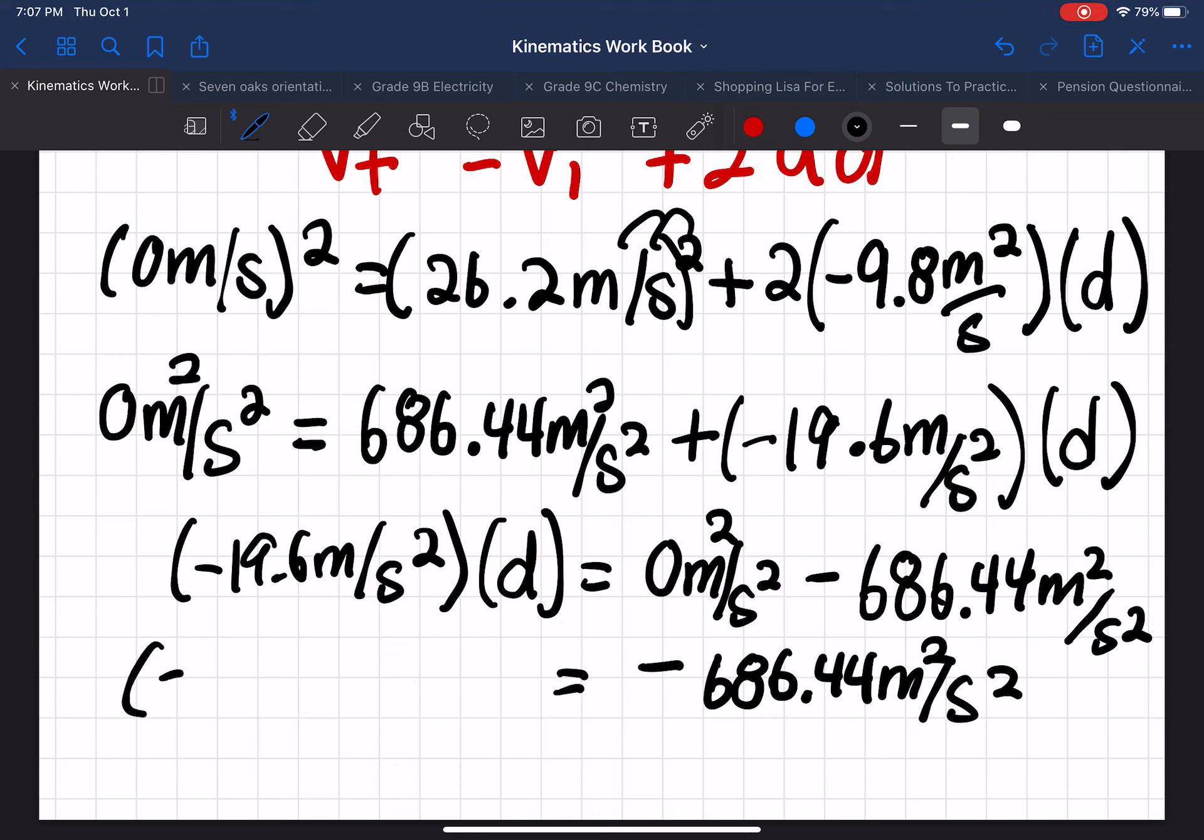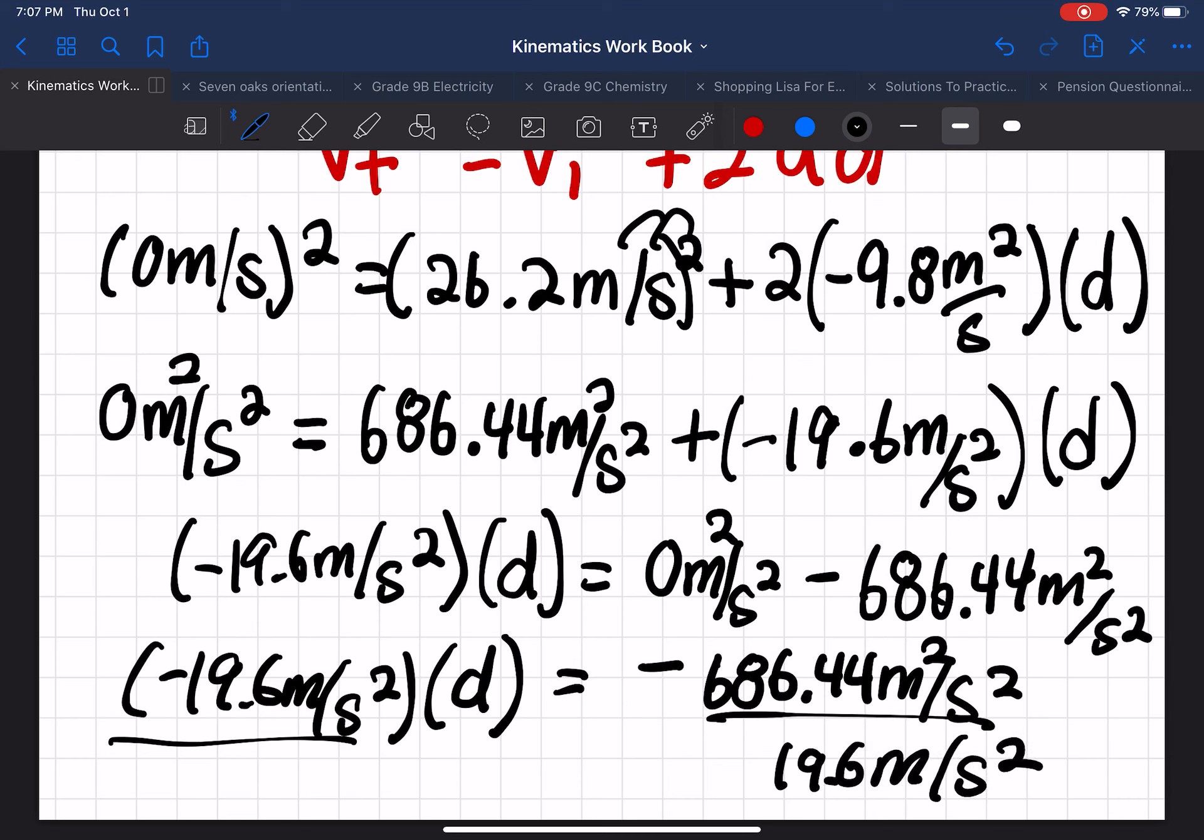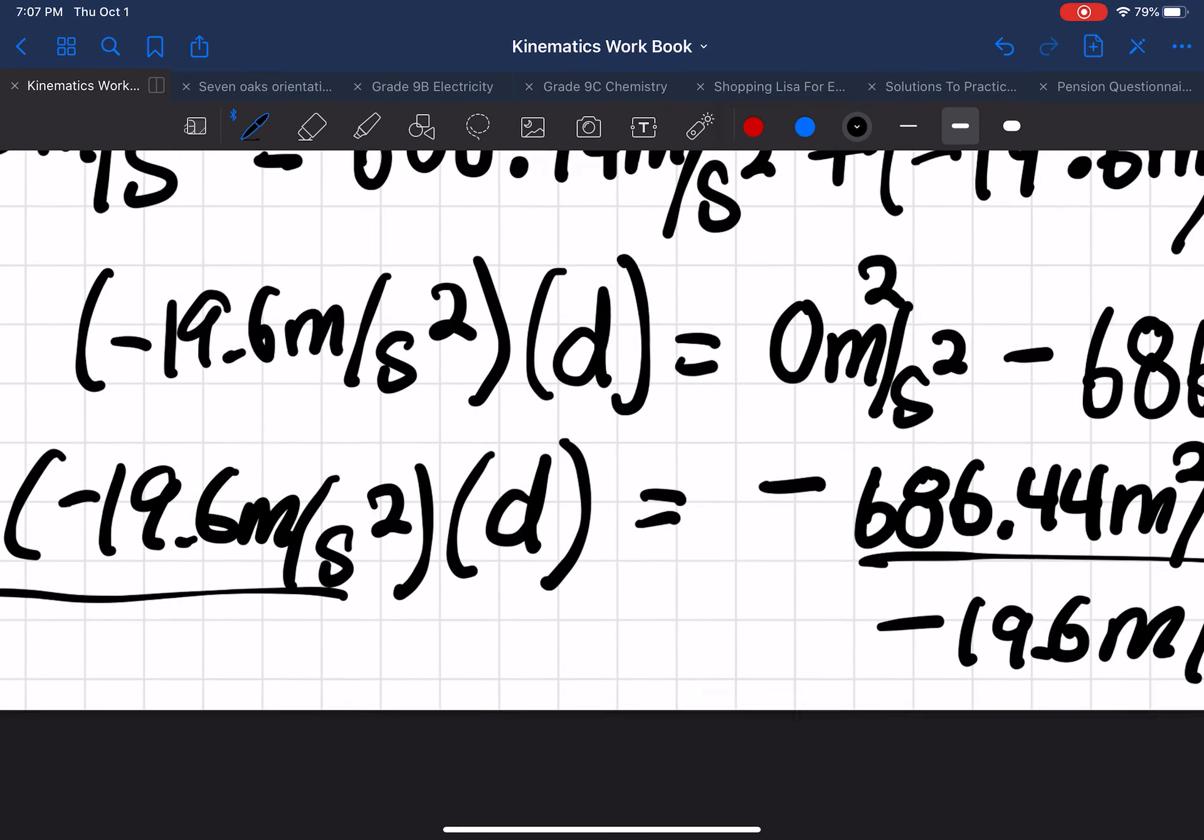And you're going to get minus 686.44 meters squared per second squared equals negative 19.6 meters per second squared times d. And then isolate for d by dividing the 19.6 over to this side.